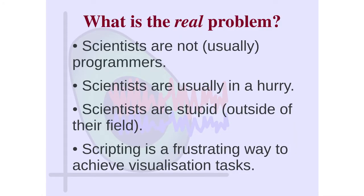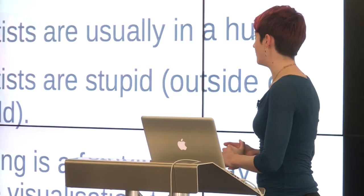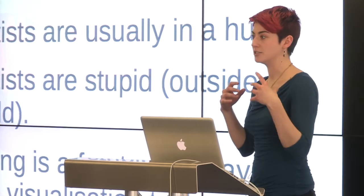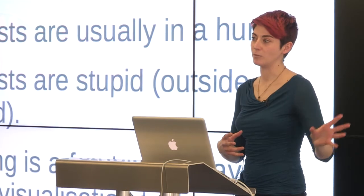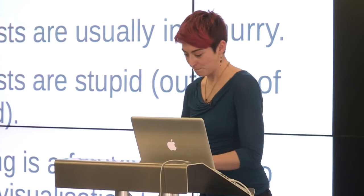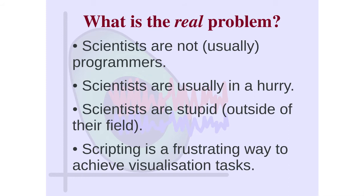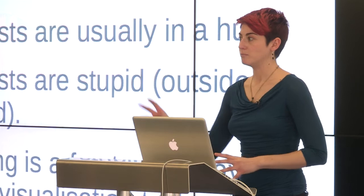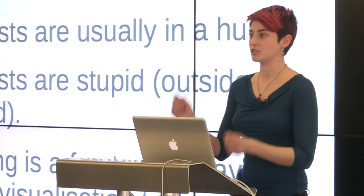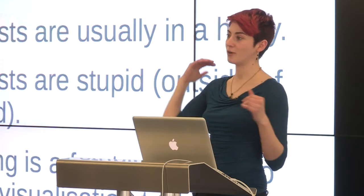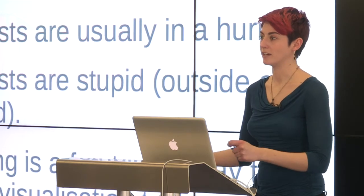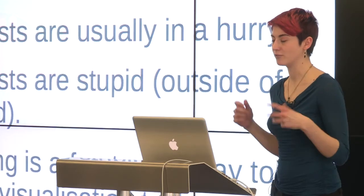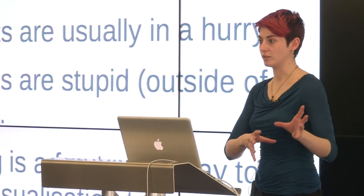The other thing about scientists is that they're typically in a hurry. Time is short. Writing specific code with a nice reusable interface is hard and we don't like to do it. It's easy to quickly code something up and use it for what you need, but if you come back to code you wrote two months ago, you won't have any idea what it did unless you documented it well. Scripting can also be a frustrating way to visualize data — you have to go back and rerun your entire script just to change one small thing like a color or axis title.